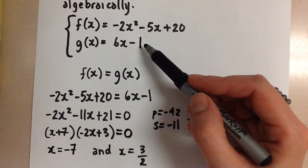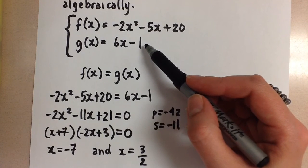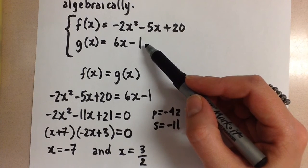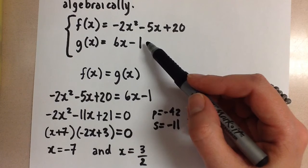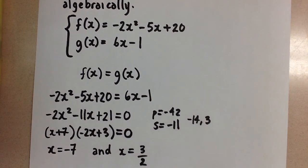If I were you, I would always choose the easier looking equation. So I'm going to go with the linear equation here of 6x minus 1 to sub in my x values and solve for y.